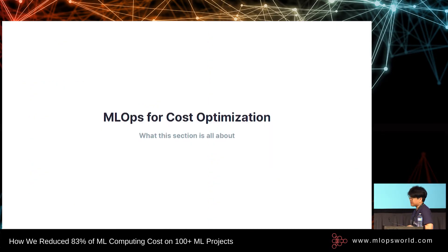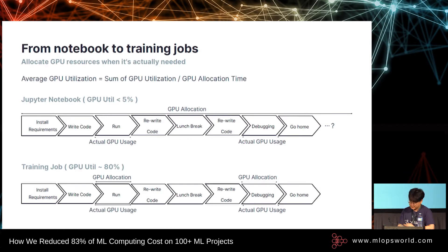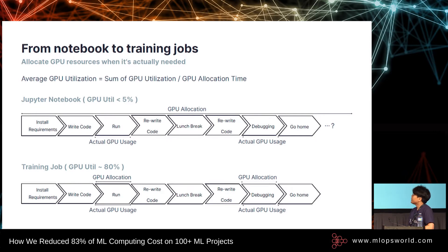Now let's move on to our first topic: machine learning operation for cost optimization. We have to talk about job orchestration and training jobs. Training jobs can extremely maximize GPU usage. With Jupyter Notebook, you first allocate GPUs and then spend hours installing requirements, writing code, or even taking a lunch break, and during that time the GPUs are not actually used.